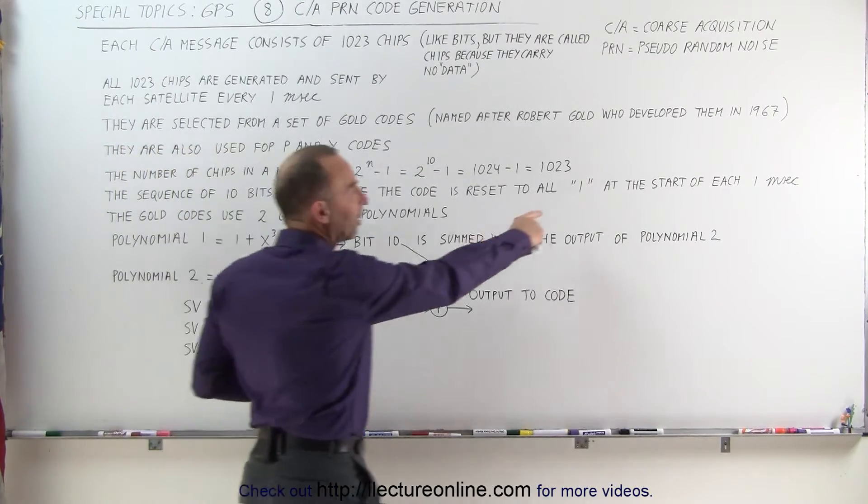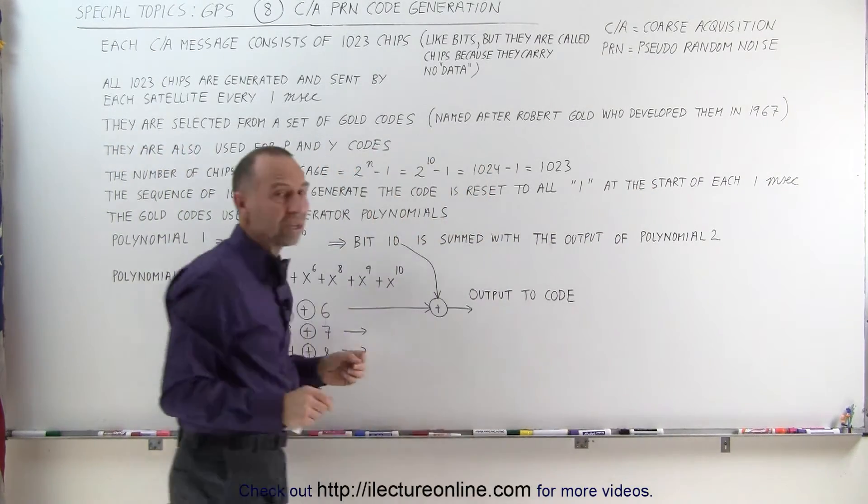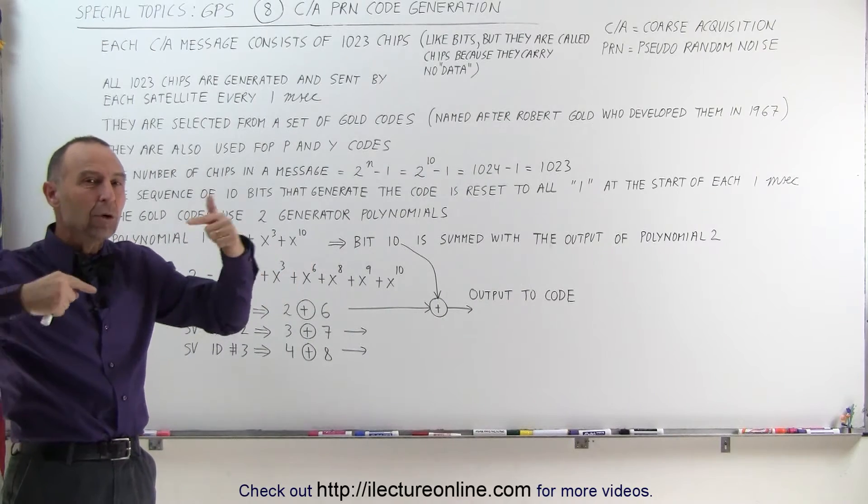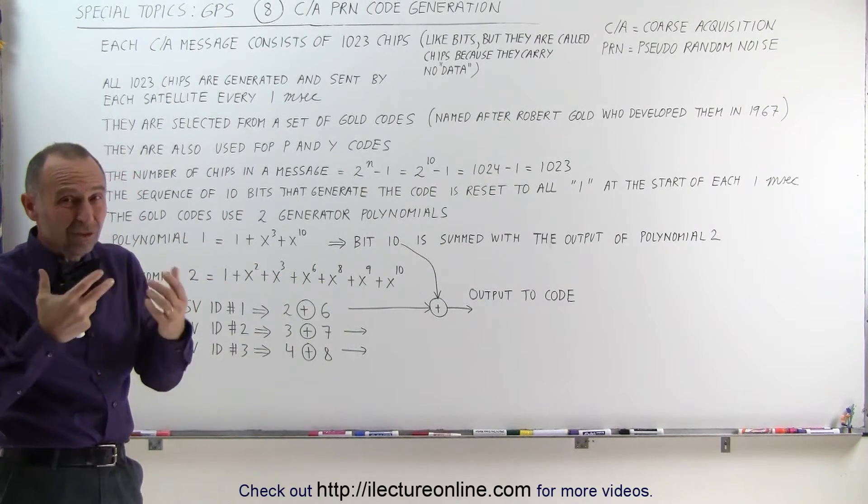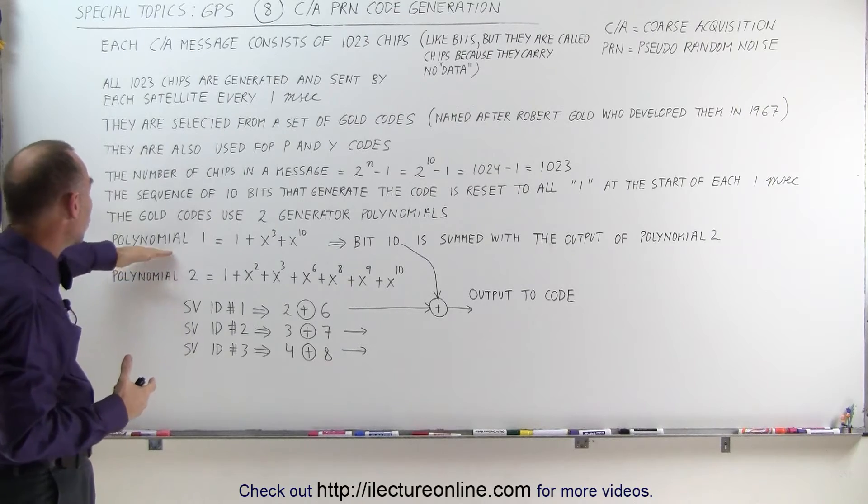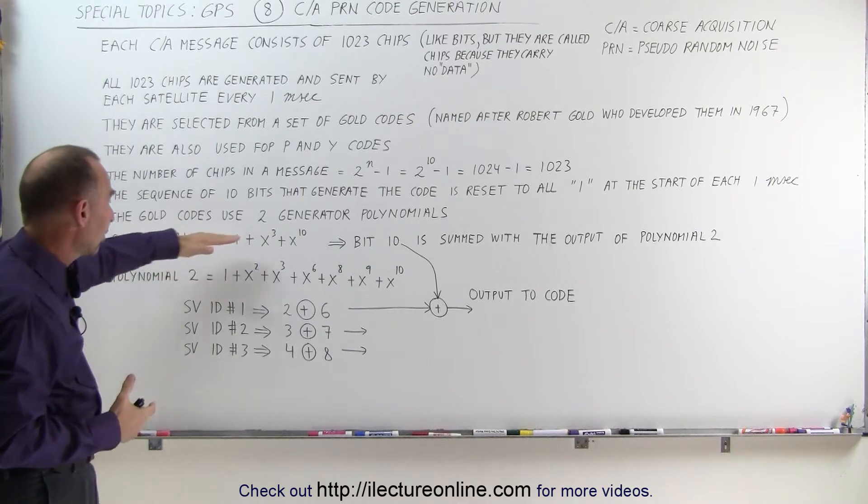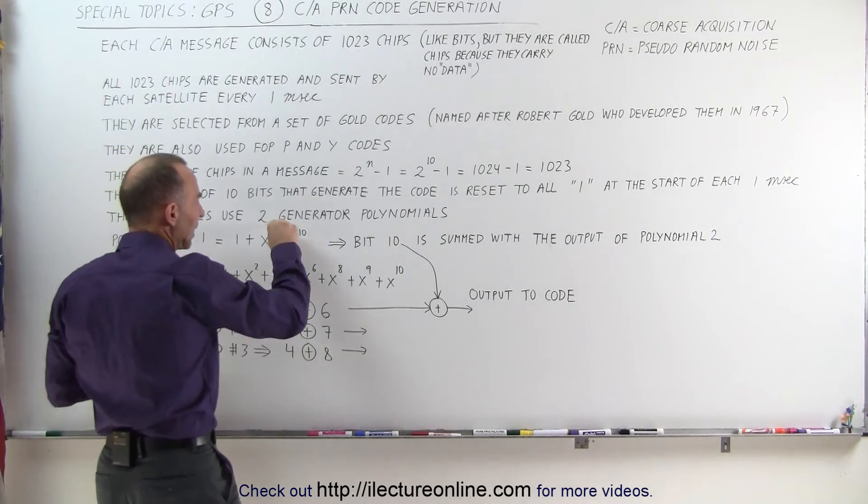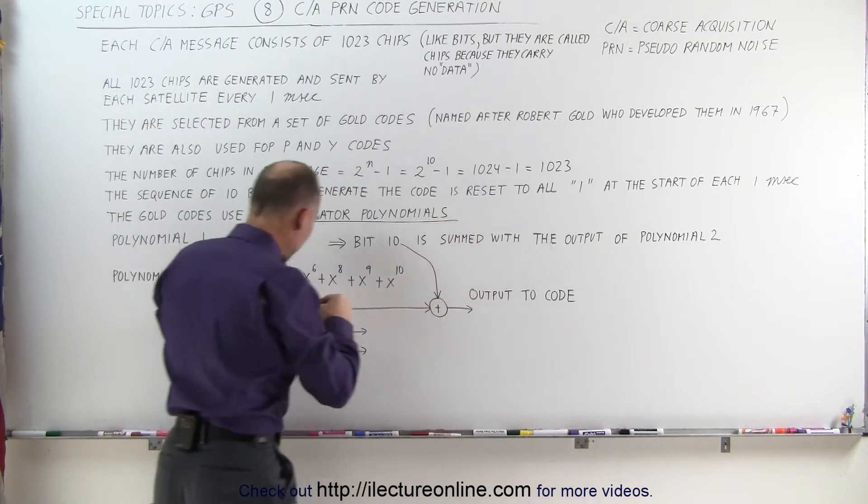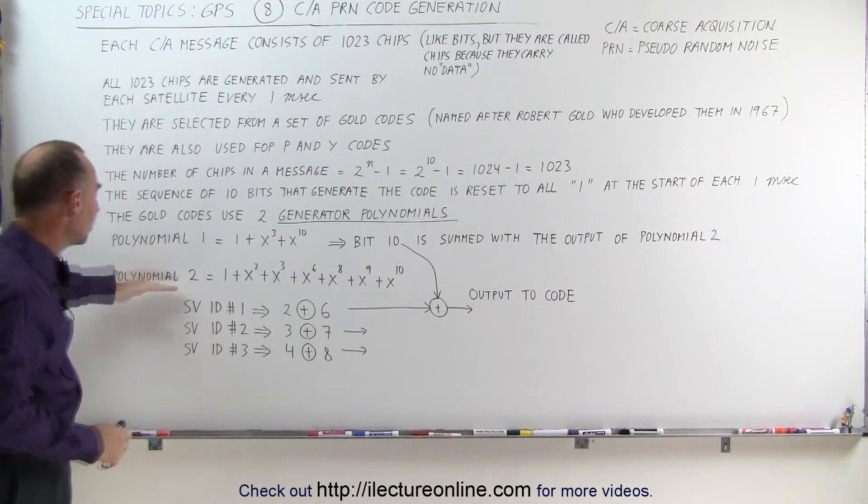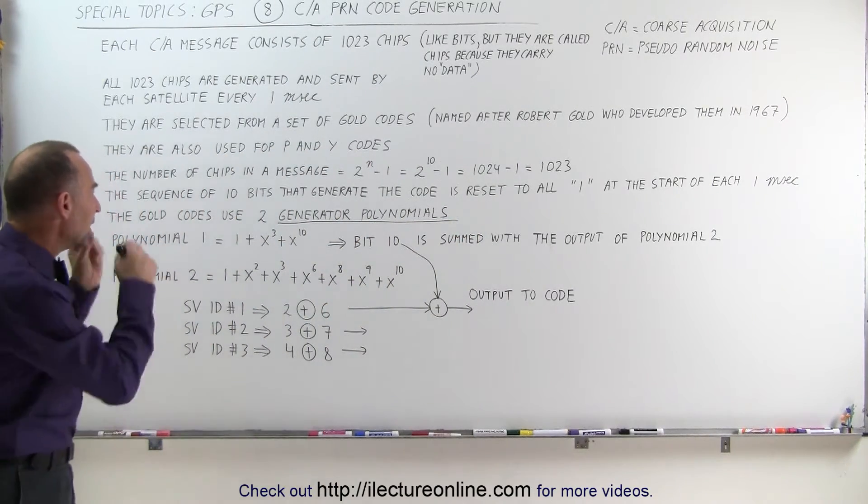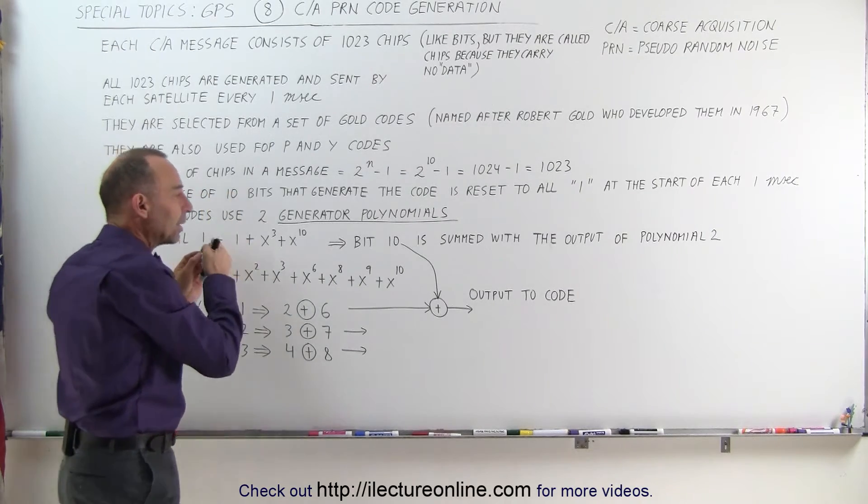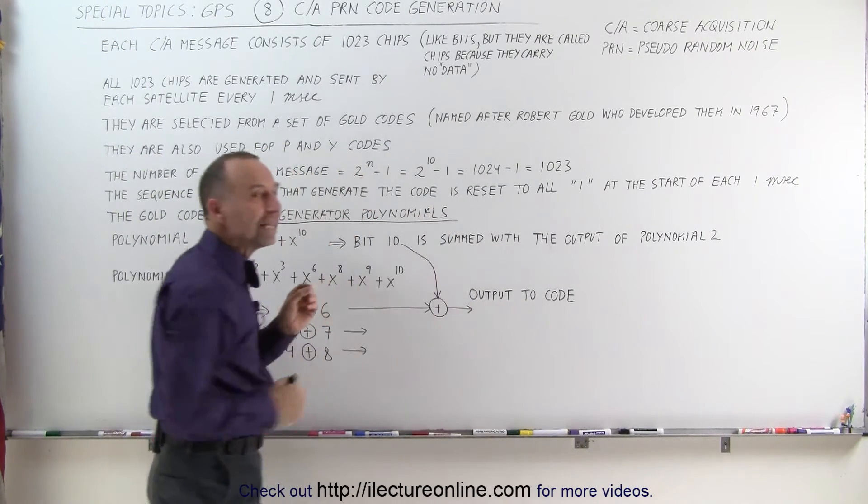They're always set to ones at the start of each one millisecond. So they're all set to ones and then we go to the system of manipulation, which is basically what we call the polynomials, the generator polynomials. That's what we call them here. Let me underline that. So we're going to use two generator polynomials, polynomial 1 and polynomial 2, to manipulate those 10 bits in such a way that they'll produce a unique code for each satellite.